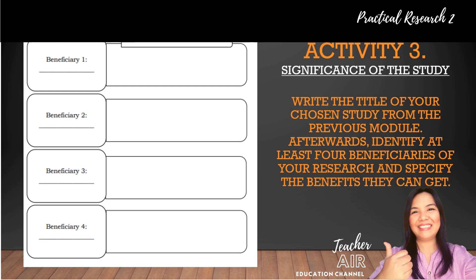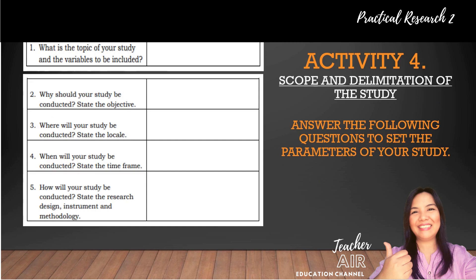Activity four is for scope and delimitation of the study. Answer the following questions to set the parameters of your study right after this video lesson: number one, what is the topic of your study and the variables to be included? Number two, why should your study be conducted — state the objective. Number three, where will your study be conducted — state the locale. Number four, when will your study be conducted — state the time frame. And number five, how will your study be conducted — state the research design, instrument, and methodology. Kindly take a screenshot of this activity and find time to answer these questions right after viewing this video.